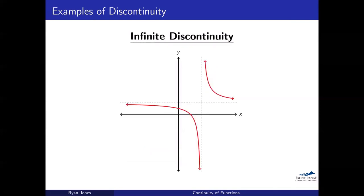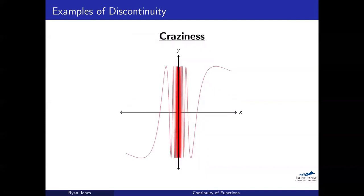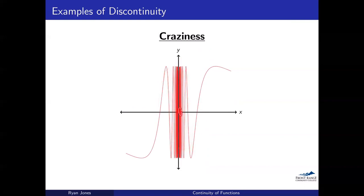Next is an infinite discontinuity, where there's an asymptote at an x value. Very clearly I have to pick up my pencil to draw the rest — going from the bottom up to the top requires lifting my pencil. Another type is a discontinuity due to craziness: the function is just oscillating insanely and no one really knows what's happening inside that region, so we say the function is discontinuous.